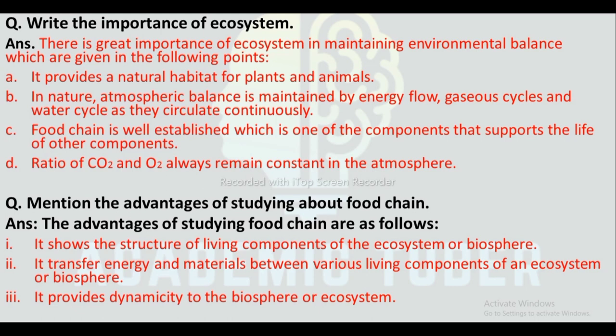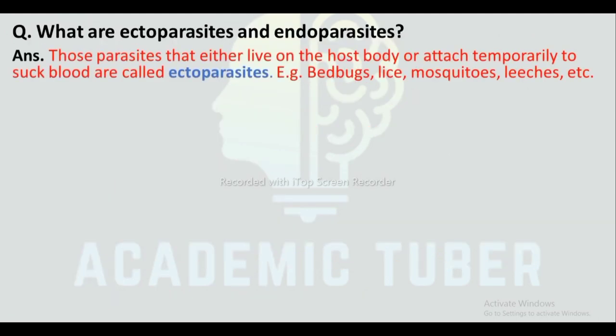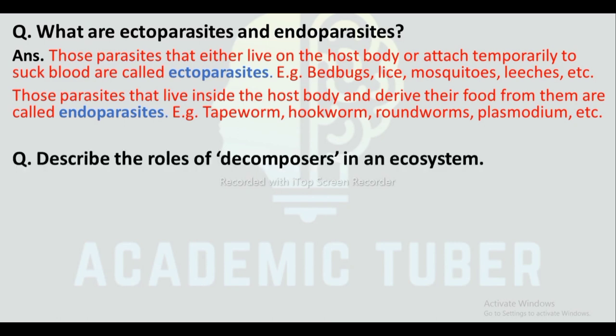Question: What are ectoparasites and endoparasites? Ectoparasites are those parasites that either live on the host body or attach temporarily to suck blood — examples include bed bugs, lice, mites, etc. Endoparasites are those parasites that live inside the host body and derive their food from them — examples include tapeworm, hookworm, roundworm, and Plasmodium.